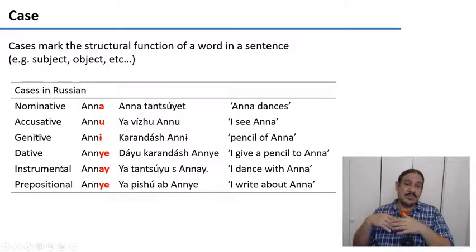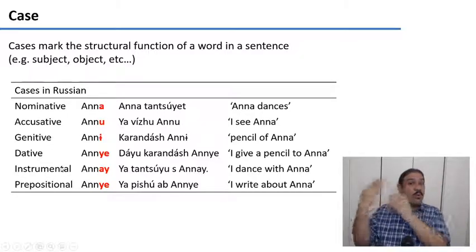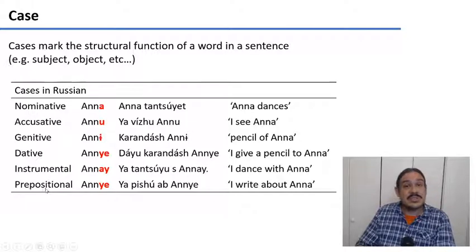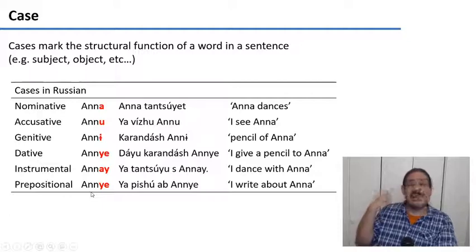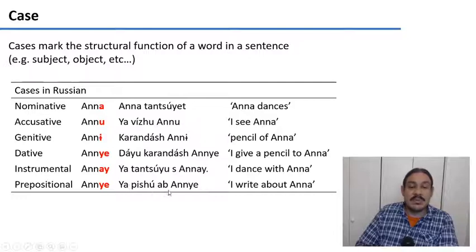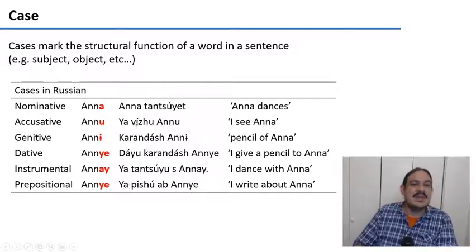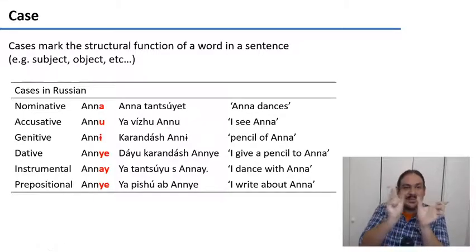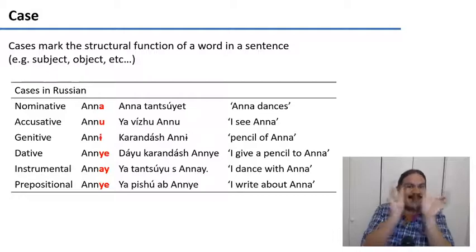The instrumental is used to mean that you're doing something with Anna, as in 'Ya tantsuyu s Annoy' — I dance with Anna. The prepositional is used when you're talking about something or doing something in a place, as in 'Ya pishu ob Anne' — I write about Anna. So as you can see, you have the root of the noun and then a morpheme called case that tells you what that noun is doing in the sentence.